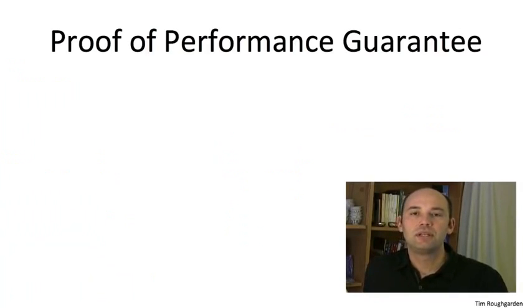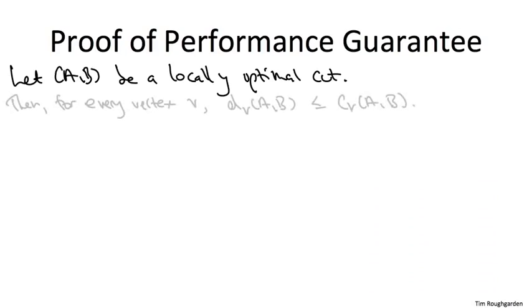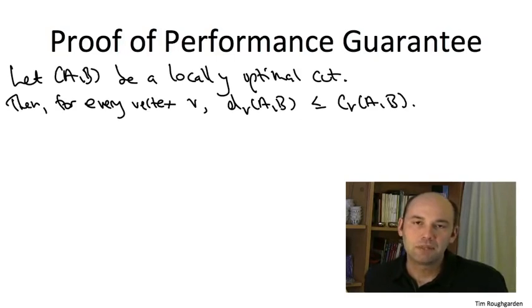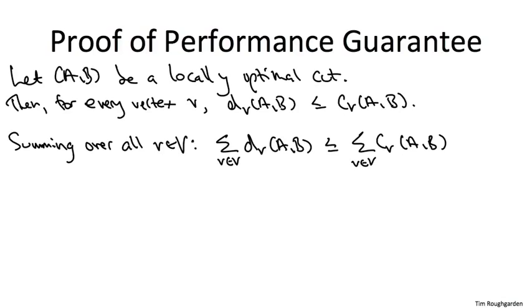Let's now prove that local search is guaranteed to output a cut whose number of crossing edges is at least half the total number of edges in the graph. So pick your favorite locally optimal cut AB. And here by locally optimal, I just mean something that the algorithm might return. That is, a cut for which it's impossible to swap a single vertex from one side to the other and improve the value of the cut. By virtue of being locally optimal, it must be the case that, for this cut AB, and for every single vertex V, the number of edges incident to this vertex that are crossing the cut is at least as large as the number of vertices incident to this vertex that do not cross the cut. So in the previous notation, C_V is at least as big as D_V. If not, swapping V would give us a better cut. So we have n of these inequalities, once for each vertex V, so we can legitimately sum up those n inequalities, combining them into one.